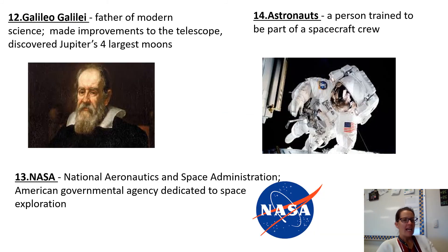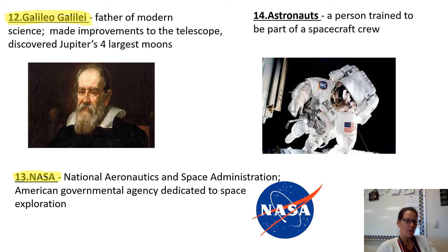This is our last slide. We're going to talk about Galileo Galilei — he was the father of modern science. He made improvements to the telescope; he didn't invent it, but he improved it, and he discovered Jupiter's four largest moons. Down at the bottom we've got NASA — the National Aeronautics and Space Administration — the American governmental agency dedicated to space exploration.